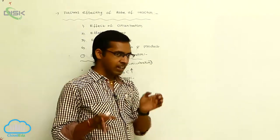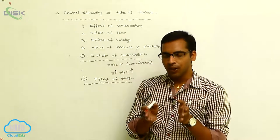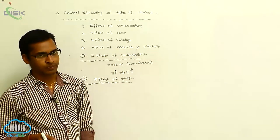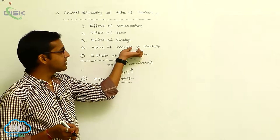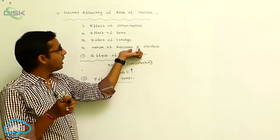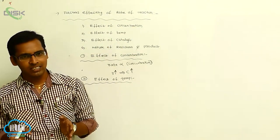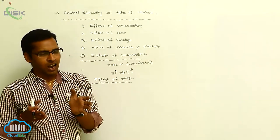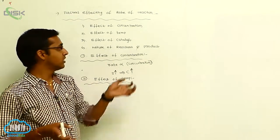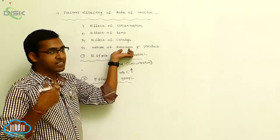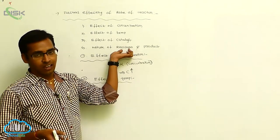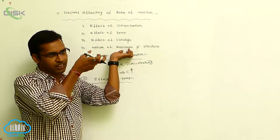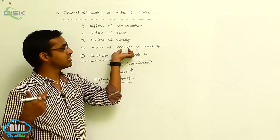The next factor is effect of catalyst. In a chemical reaction, whenever a catalyst is used, the rate of reaction increases. And the next factor is nature of reactant and product. The nature of reactant and product is an important factor affecting rate of reaction. Some reactions involve more number of bond breakages, which require more time — that is a slow reaction. Some reactions are very fast.